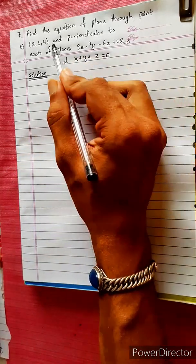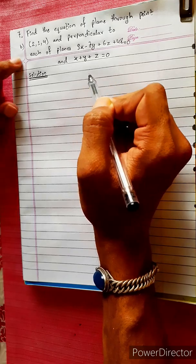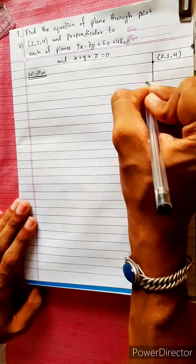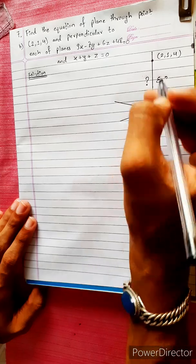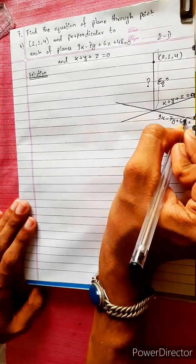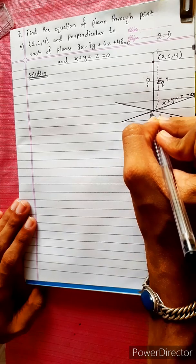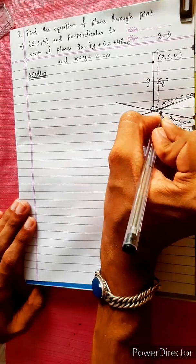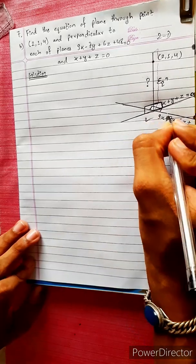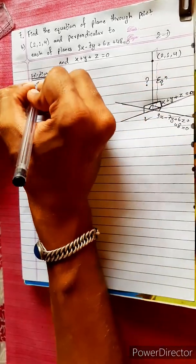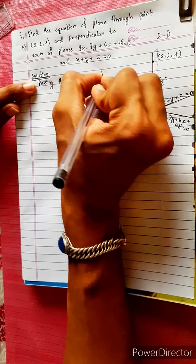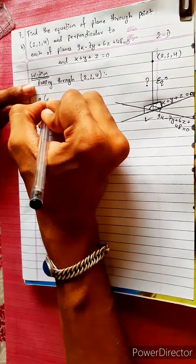Find the equation of a plane passing through the point and perpendicular to each of the given planes. This is the figure. The point is (2, 1, 4). We need to find the plane. This is the two-dimensional plane, the 3D plane, the rectangular plane. The plane is perpendicular. We will find the equation passing through point (2, 1, 4). The equation uses the direction ratio: X minus X1.